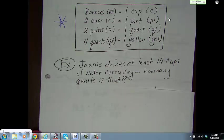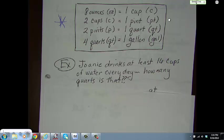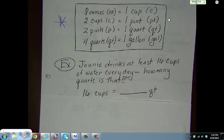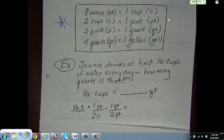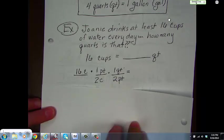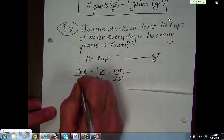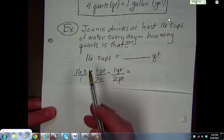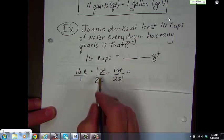Here's an example of using this. Joanie drinks at least 16 cups of water every day. How many quarts is that? Well, we know we've got to find 16 cups is how many quarts. So, we're going to use our railroad tracks again. So, we have 16 cups. And, you could put that over 1 if you want to. That would be fine.